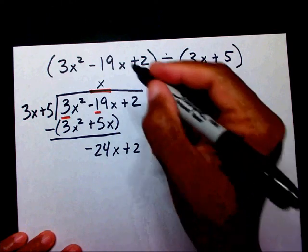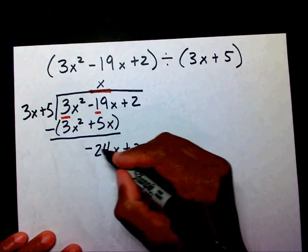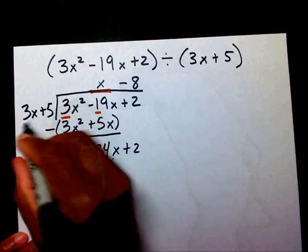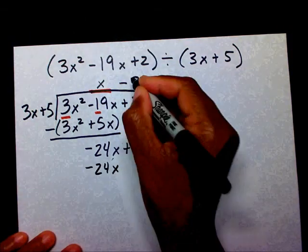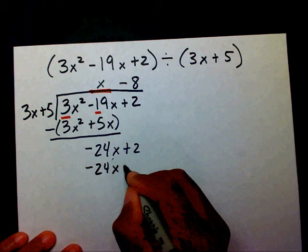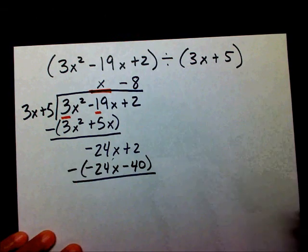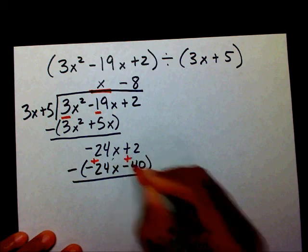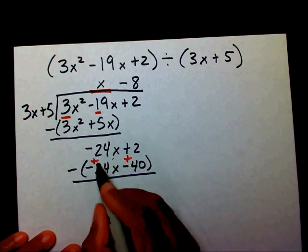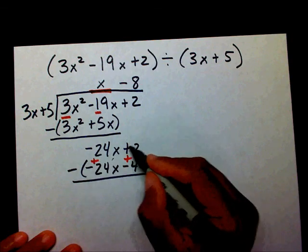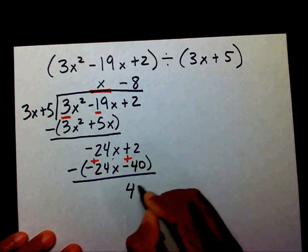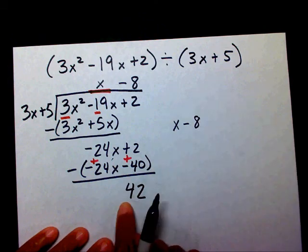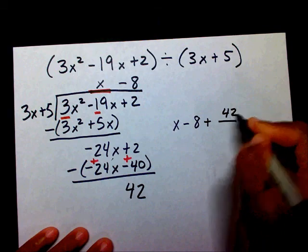Now I need to know what number times 3x will give me negative 24x — that number is going to be negative 8. Negative 8 times 3x is negative 24x, and negative 8 times positive 5 is negative 40. I need to subtract this binomial. So this negative will become a positive, and this negative will become a positive. Negative 24x plus 24x — they cancel each other out. 2 plus 40 is 42. So my final answer is x minus 8 plus 42 over 3x plus 5.